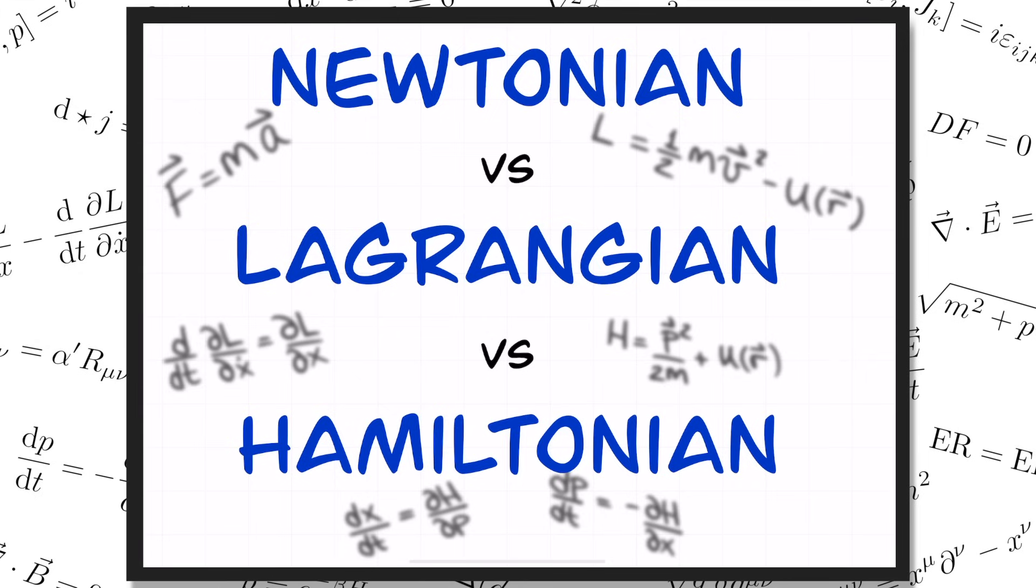Newtonian mechanics is what everybody learns about in their first physics class when they learn to apply F equals ma to simple systems. But there are two other formulations of mechanics that are actually more widely used by modern physicists, and they're essential for understanding quantum mechanics, meaning the physics of very small objects like elementary particles.